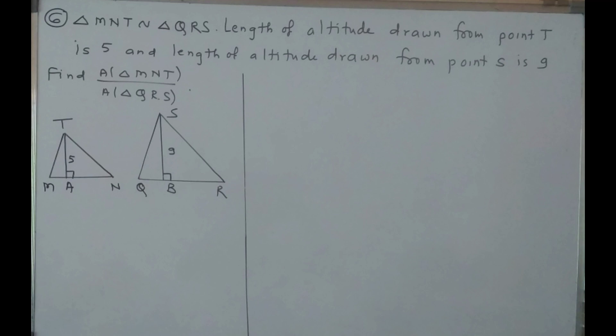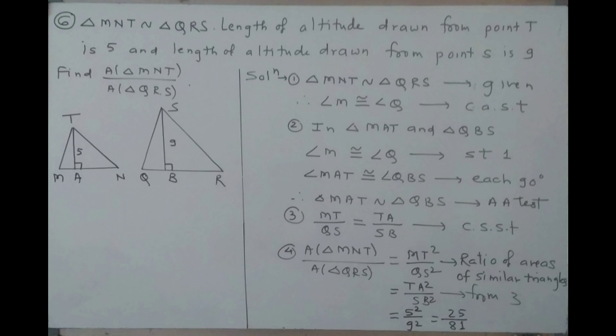Let us proceed for the solution. Triangle MNT is similar to triangle QRS — it is given. Therefore angle M is congruent to angle Q, as corresponding angles of similar triangles. In triangle MAT and triangle QBS: angle M is congruent to angle Q, which we proved in statement 1; angle MAT is congruent to angle QBS, each equal to 90 degrees. Therefore triangle MAT is similar to triangle QBS by the AA test of similarity.